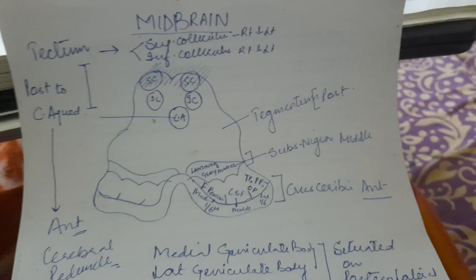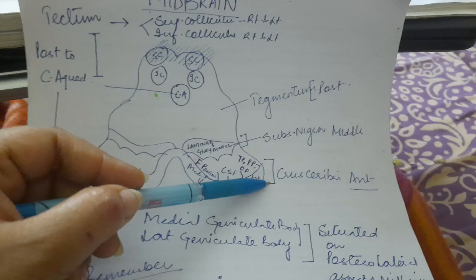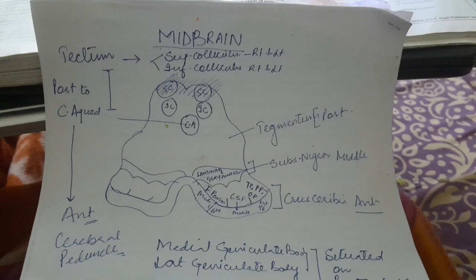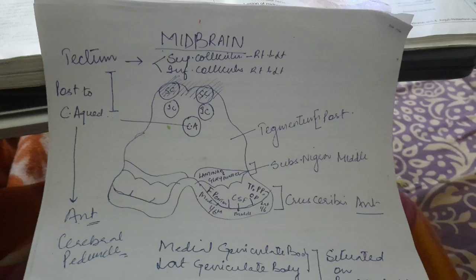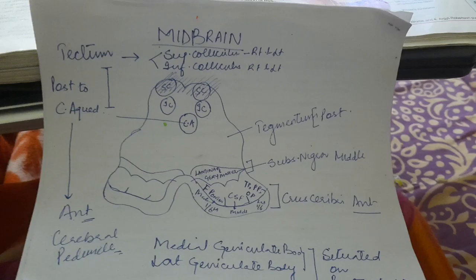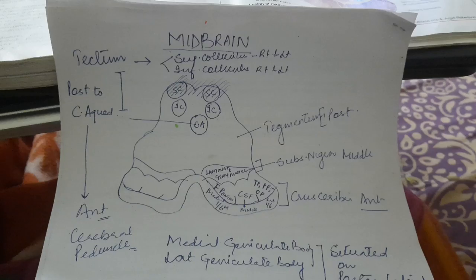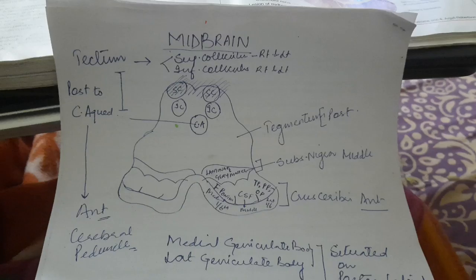We have a cerebral peduncle on the right side and on the left side. Each cerebral peduncle is divided into three parts: the crus cerebri, which lies anteriorly; the substantia nigra, which lies in the middle; and the tegmentum, which lies posteriorly. So in summary: the tectum is posterior to the cerebral aqueduct, the cerebral peduncle is anterior, and the cerebral peduncle's three parts are the crus cerebri (anterior), substantia nigra (middle), and tegmentum (posterior).